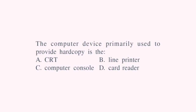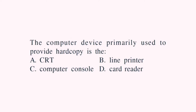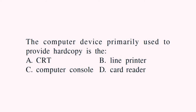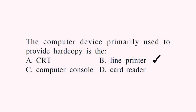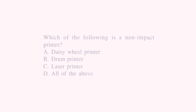The computer device primarily used to provide hard copy — which device provides hard copy? CRT — no. Line printer — yes, it is a printer. Card reader — no. Computer console — no. Output is only the printer. The correct answer will be the line printer.